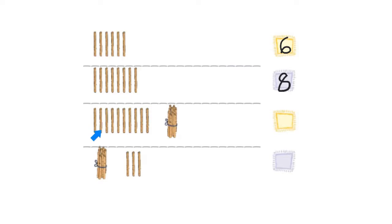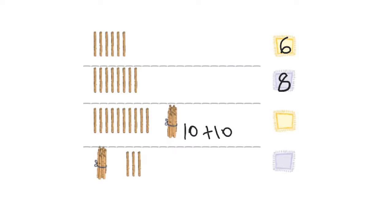In the next picture, I see one, two, three, four, five, six, seven, eight, nine, and ten. So I see ten sticks and a bundle of ten sticks. Together I have ten plus ten, which is equal to twenty sticks.